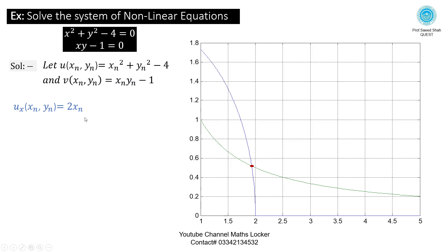Take the partial derivative of U respect to X. This is equal to 2Xn. Take the partial derivative of U respect to Y. This is equal to 2Yn. Take the partial derivative of V respect to X. This is equal to Yn. Take the partial derivative of V respect to Y. This is equal to Xn.